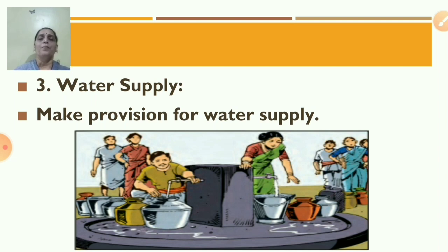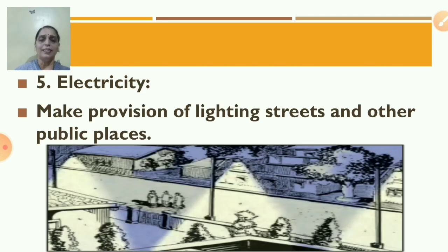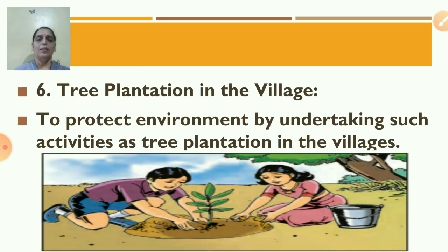Third is water supply — it makes provision for water supply. Fourth is provision of seeds — it supplies improved seeds and implements for development of agriculture. Fifth is electricity — it makes provision for lighting streets and other public places. Sixth is tree plantation in the village — to protect the environment by undertaking activities such as tree plantation.